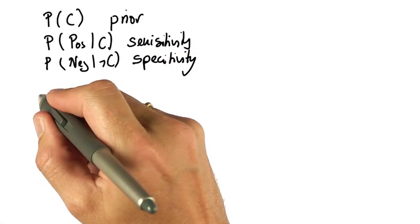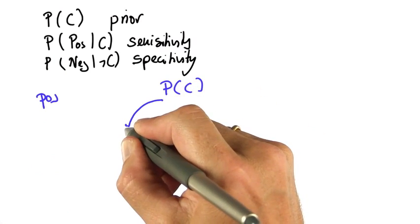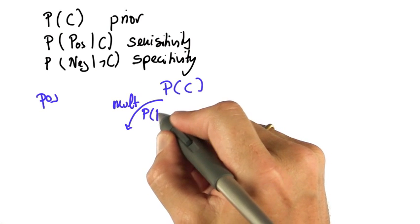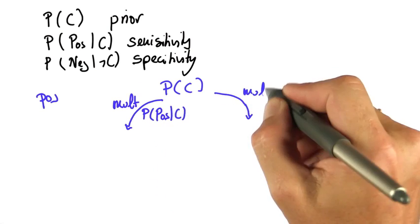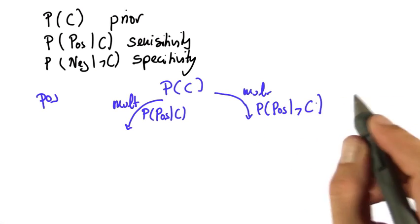When you receive a positive test result, what you do is you take your prior, you multiply in the probability of this test result given C, and you multiply in the probability of the test result given not C.